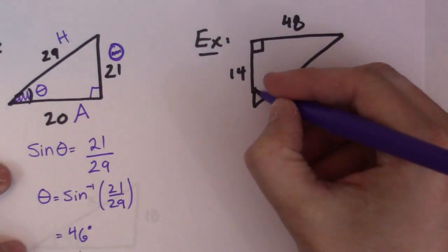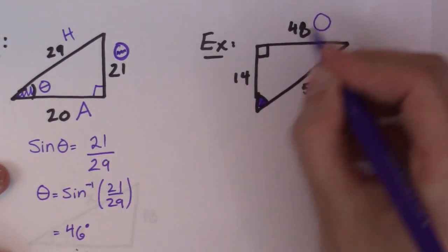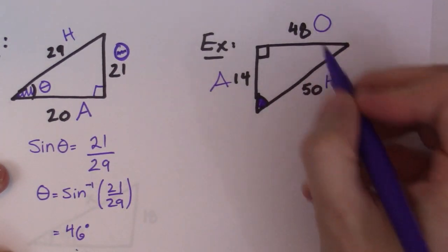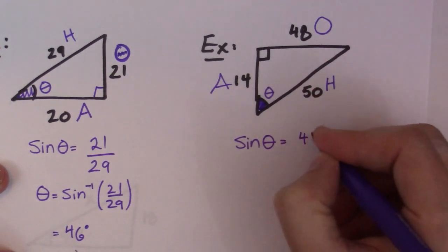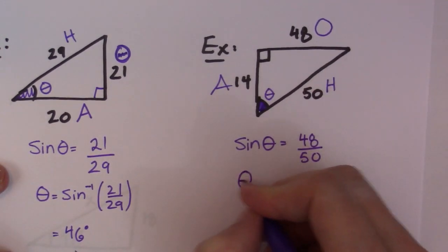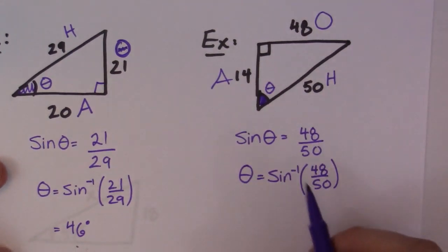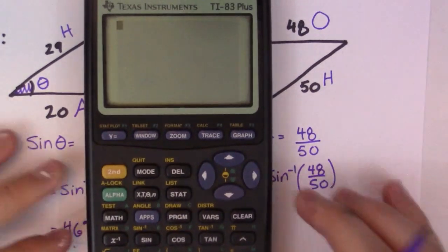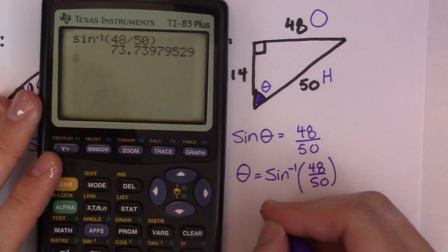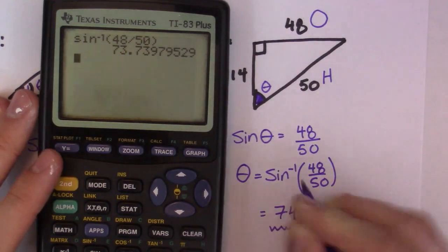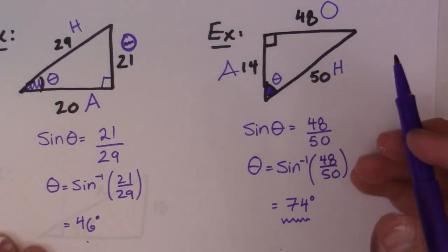Let's try it again from a different angle. Label your triangle: that's the hypotenuse crossing the right angle, the opposite side, and the adjacent side touching the angle. We're looking for opposite over hypotenuse. Sine theta equals opposite 48 over 50. So theta equals sine negative one of 48 over 50. Entering that on the calculator — second function, sine negative one, 48 over 50 — you get an angle of 74 degrees.